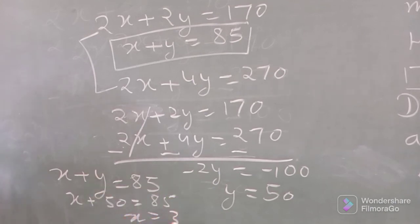x की value आई 35. और x हमने suppose किया था number of ducks. तो ducks हो गए 35 और cows 50.